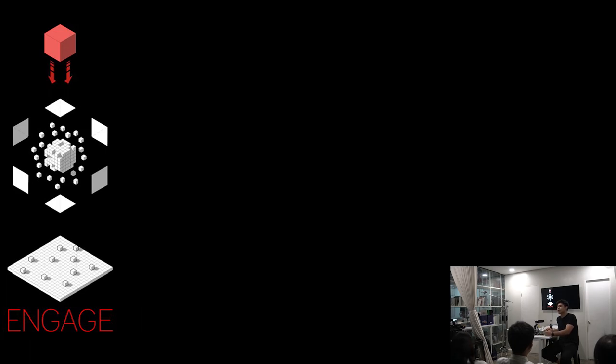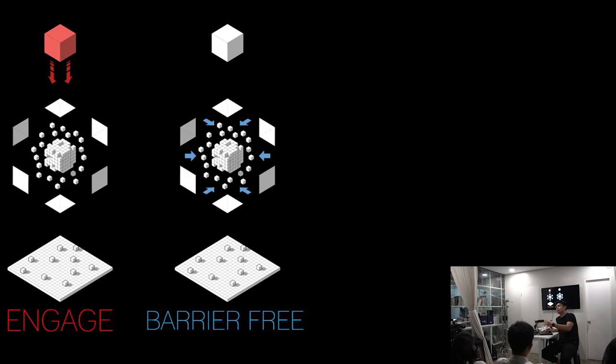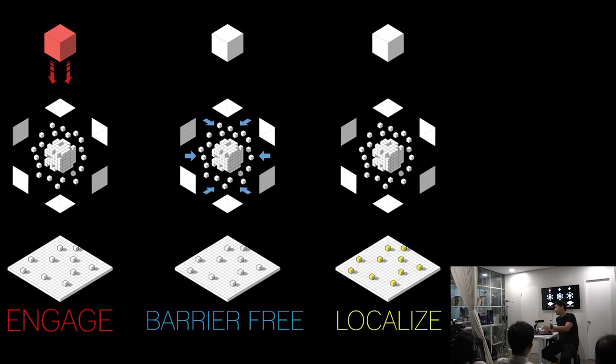What I want to focus on today is sharing my experience and my team's experience throughout different projects and typologies while developing what social architecture is. Social architecture has three key components: first is engage — we bring architecture to the people, not the other way around. Second is barrier-free — a structure where everyone is welcome without restrictions. Third is to localize — create small-scale buildings that spread impact across a city.